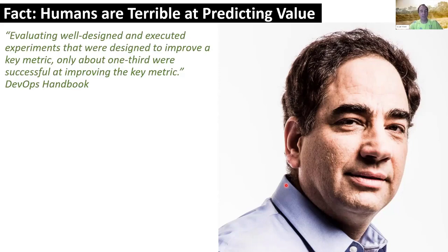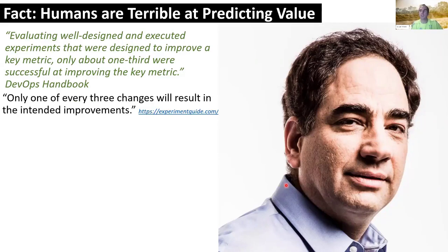Humans are terrible at predicting value — we tend to be overconfident. The person on screen is Ron Kohavi, who I first became aware of through the DevOps Handbook. There's a more succinct quote there about how poorly we predict the value of what we build.